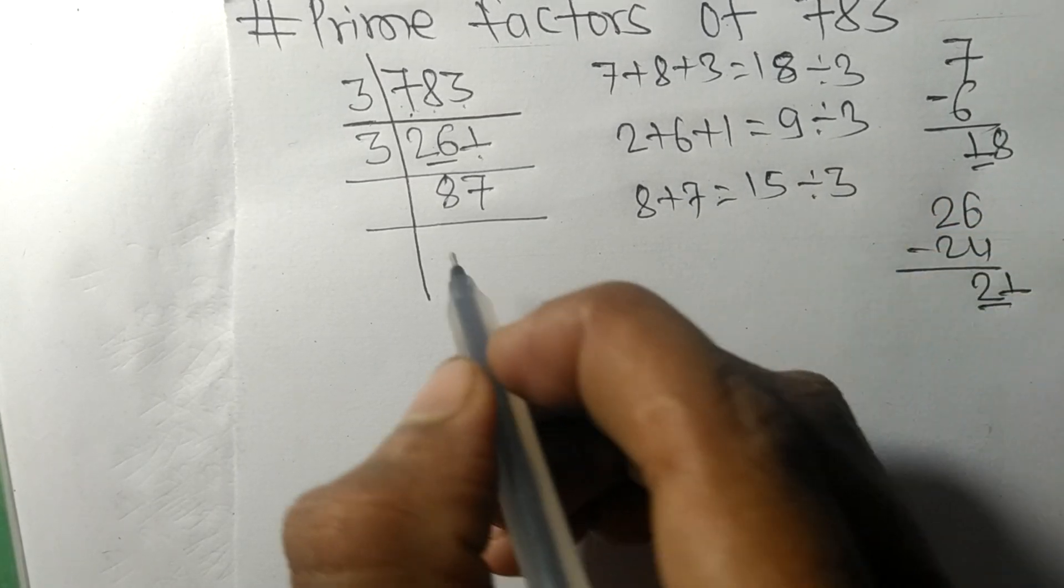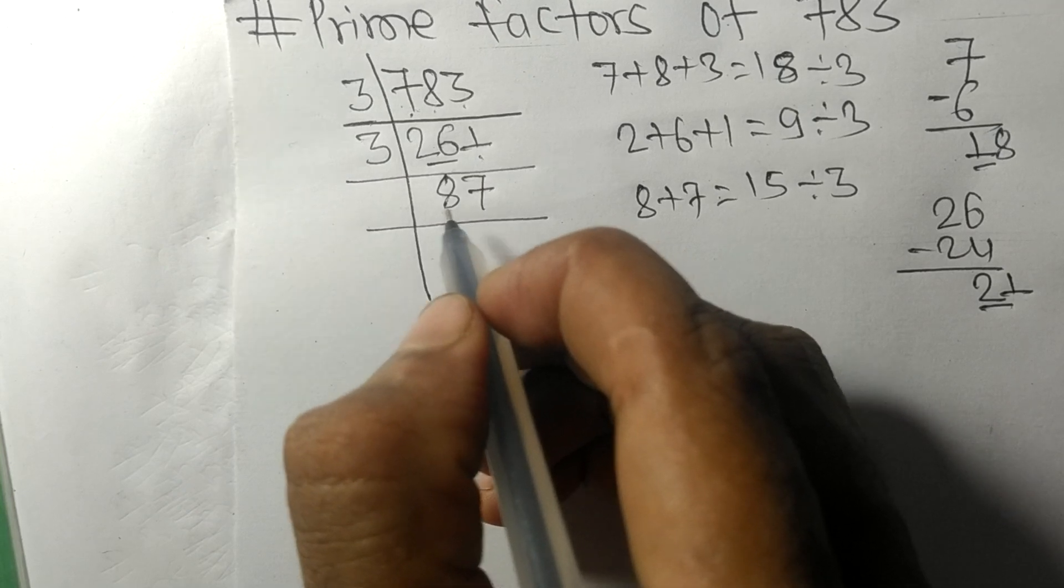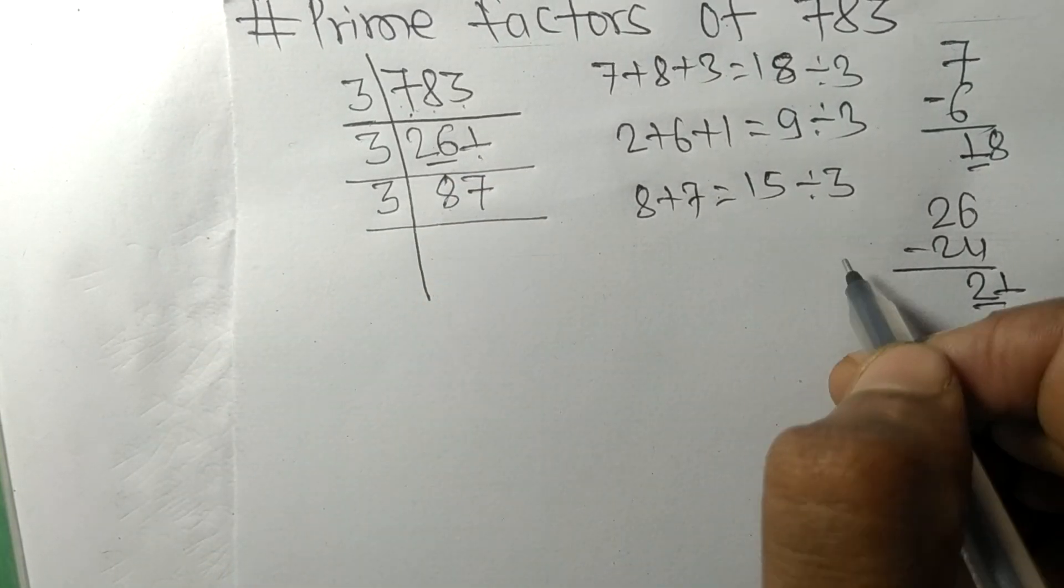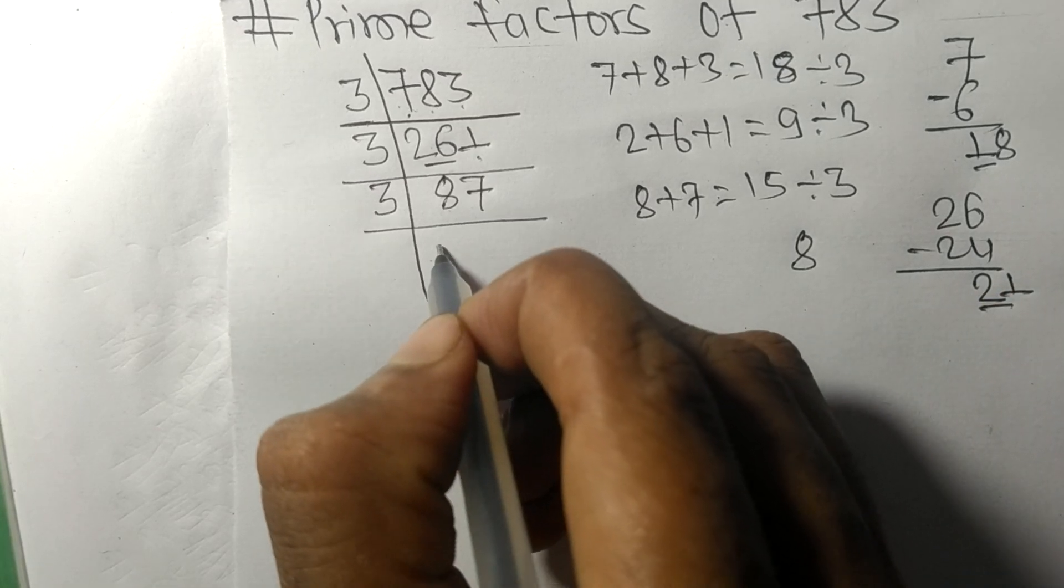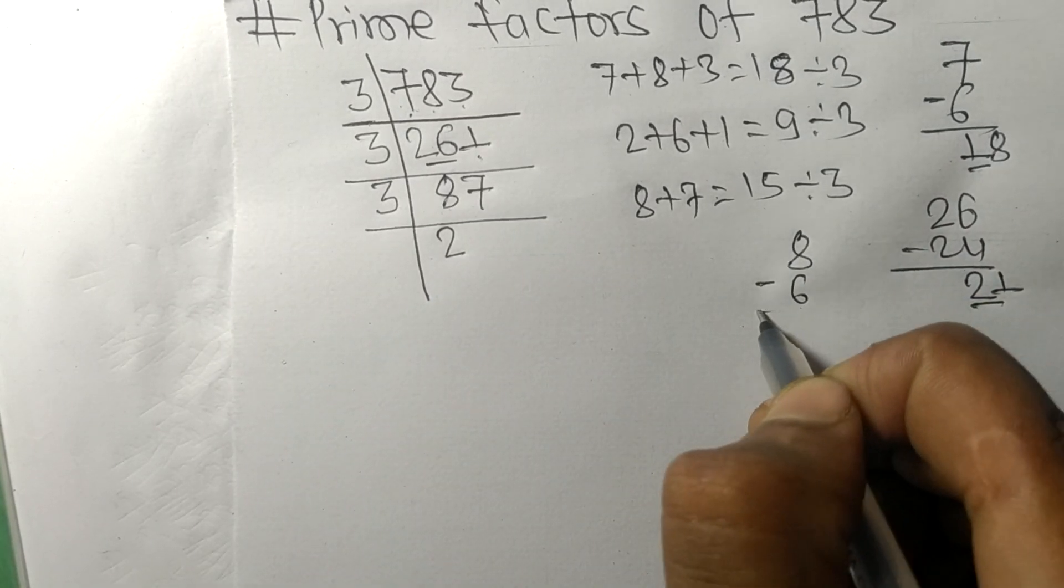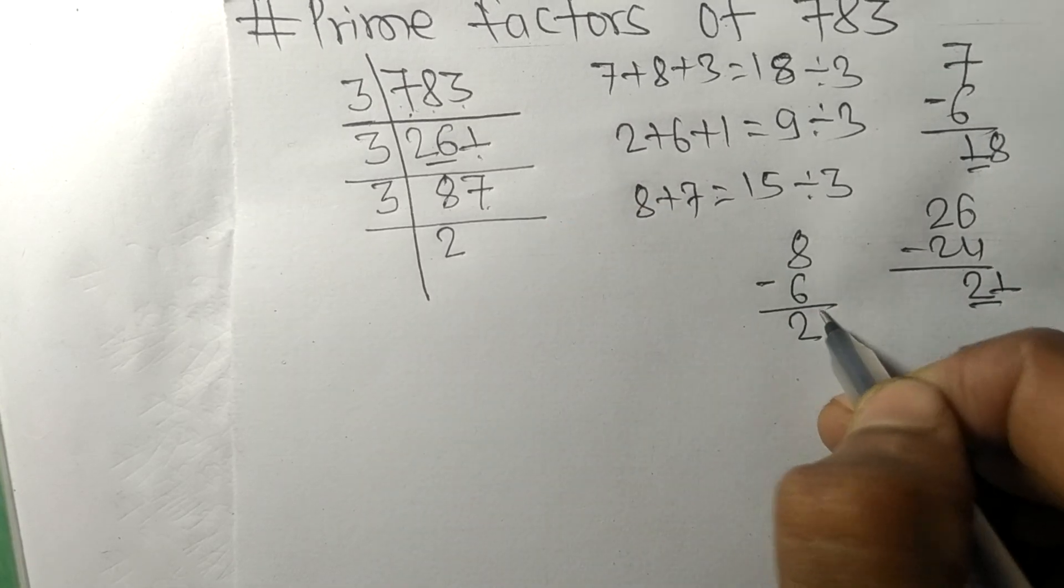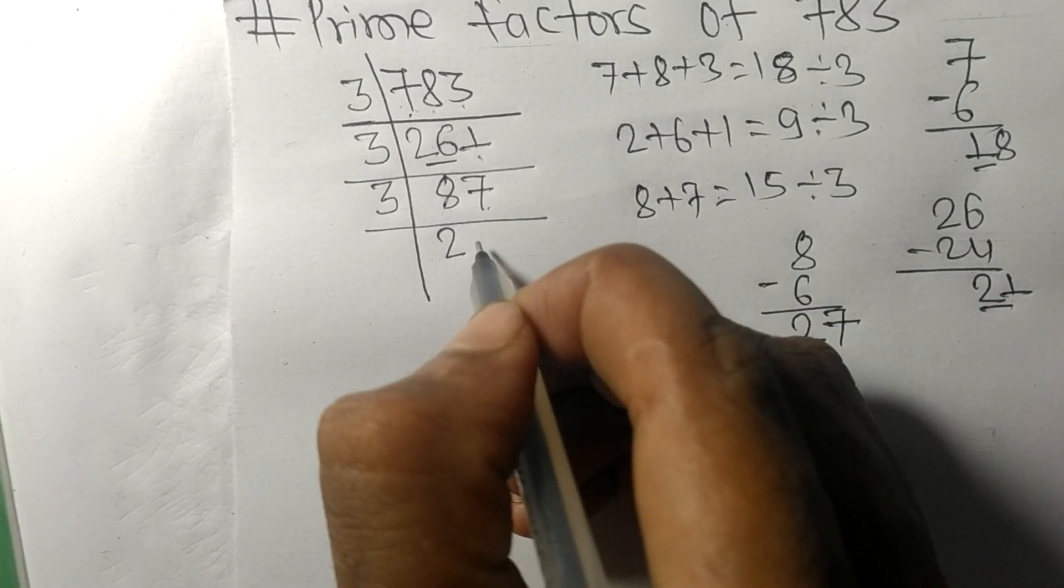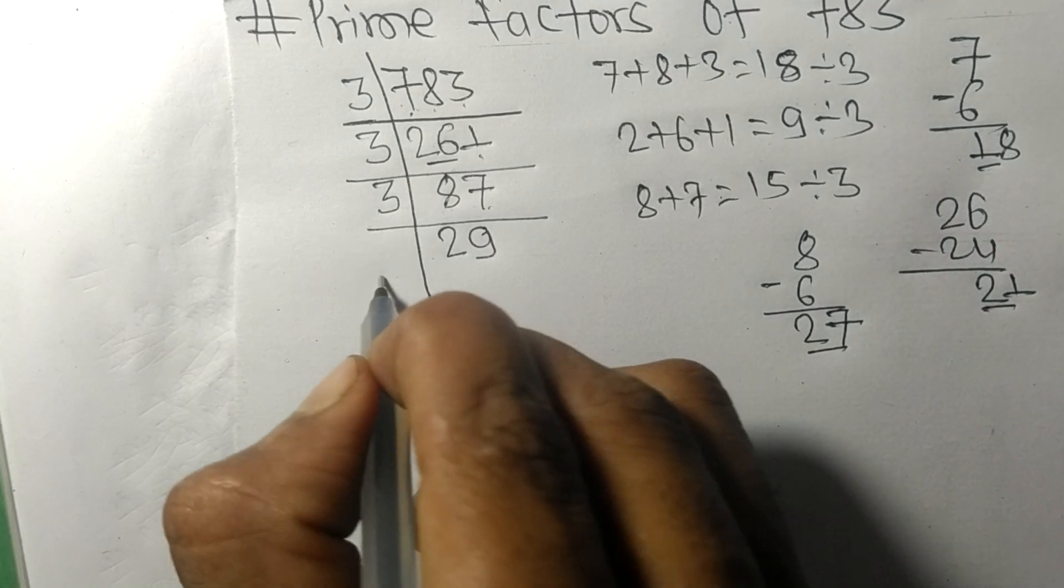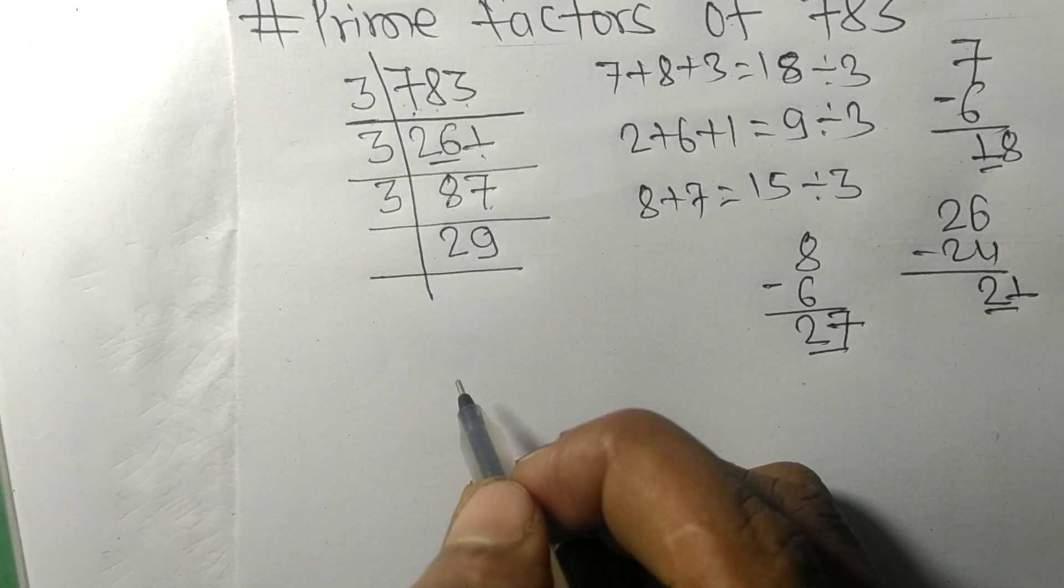So 87 is also divisible by 3. Here we have 8, 3 times 2 means 6, on subtracting we get 2. And this 7, 27, 3 times 9 means 27. So now we got 29.